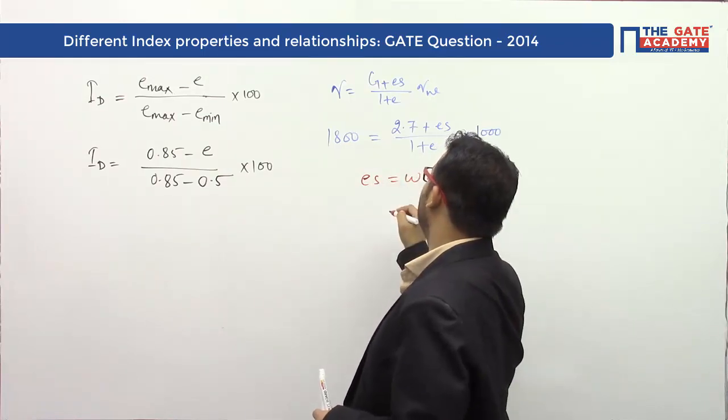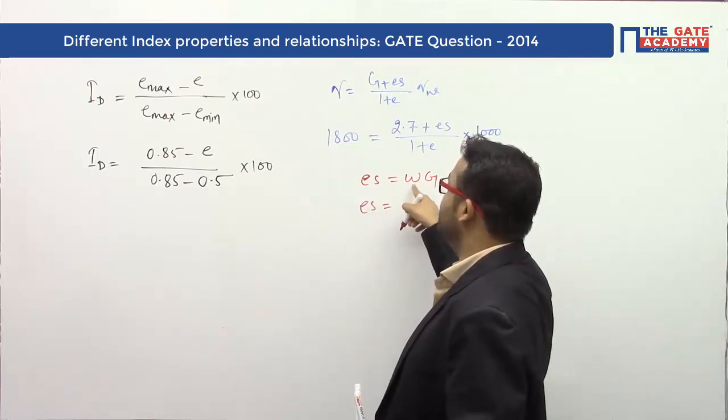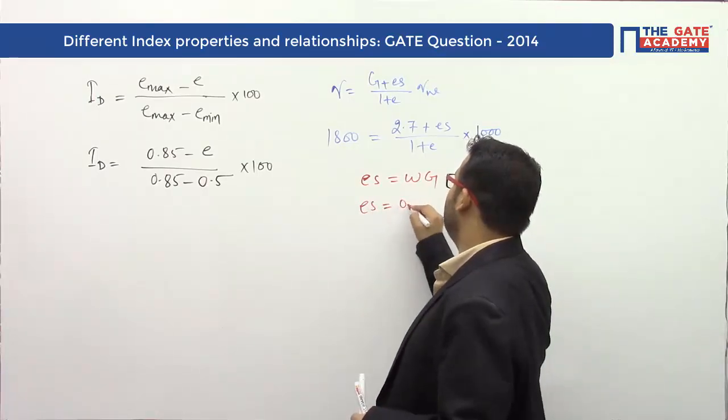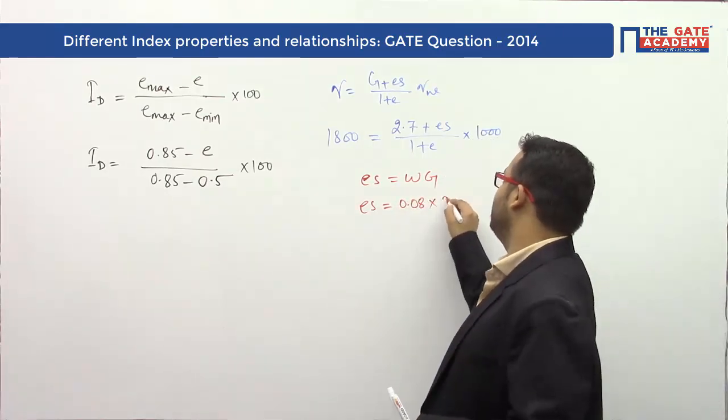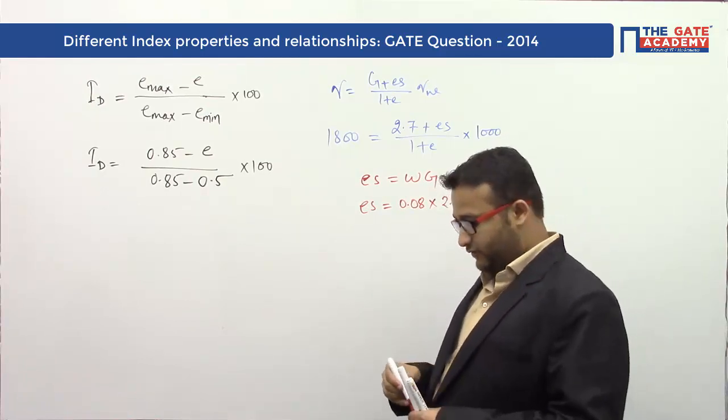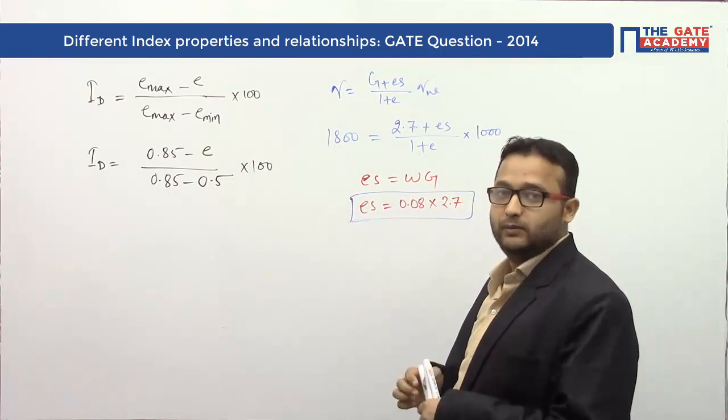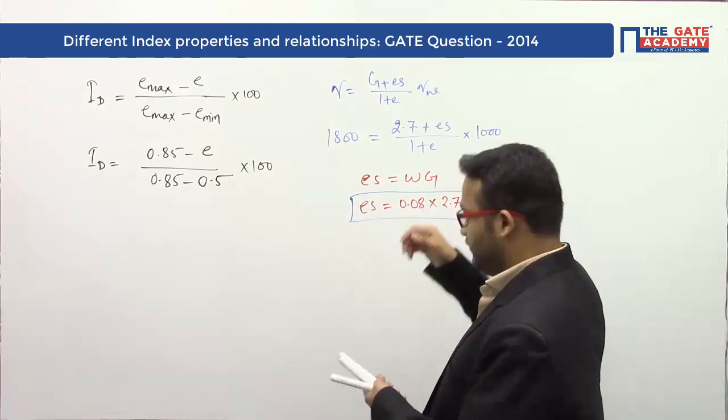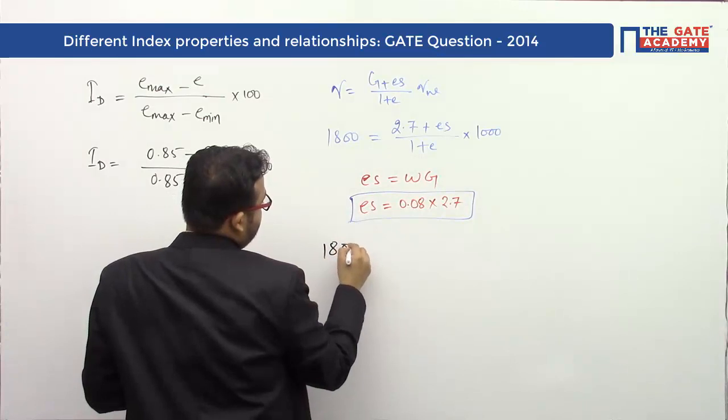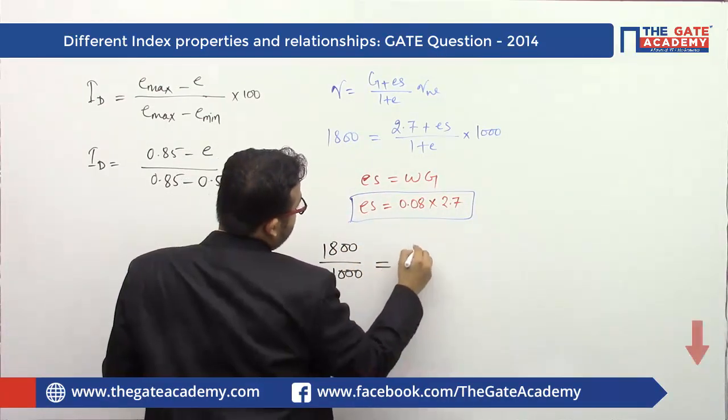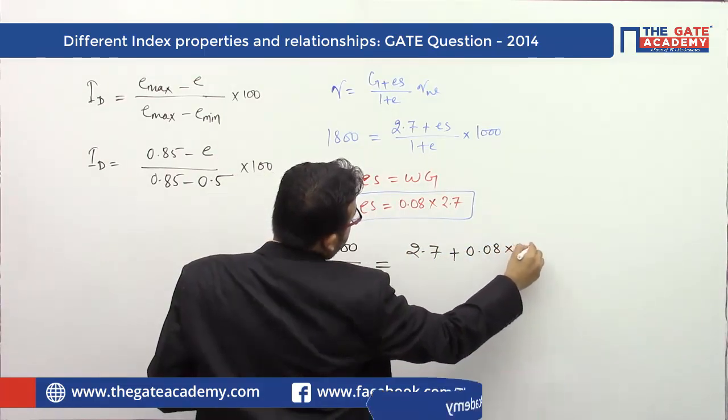I know one more equation: eS = wG. Here I want to find the value of eS. w is the water content, given as 8%, so 0.08. Specific gravity is 2.7, so eS = 0.08 × 2.7 = wG. Substituting this value: 1800/1000 = (2.7 + 0.08 × 2.7) / (1 + e).